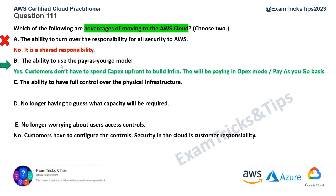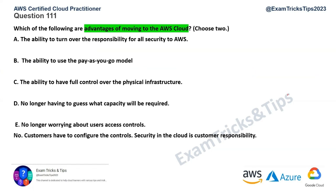Option C: the ability to have full control over the physical infrastructure. This is absolutely incorrect. Customers do not have control over physical infrastructure — they don't even know where the infrastructure is in most cases. It is AWS's responsibility to maintain, manage, and provide security of the physical infrastructure.